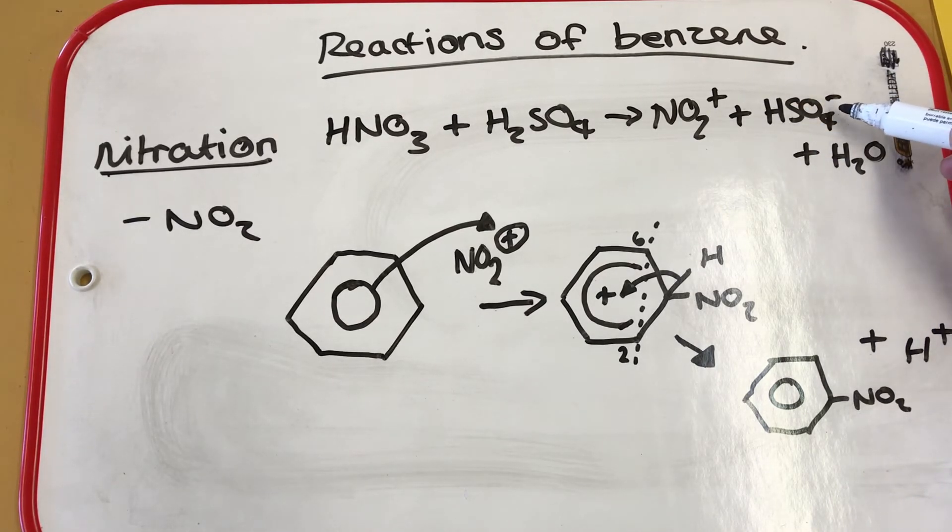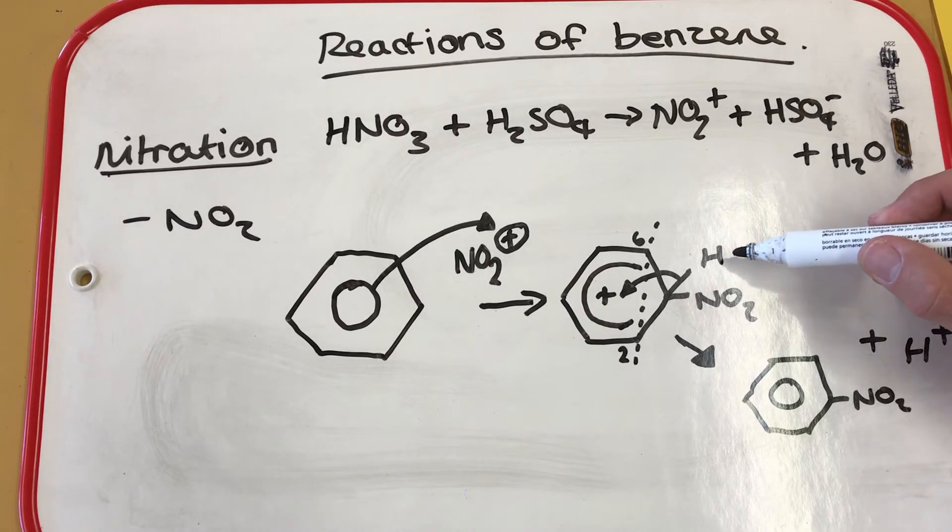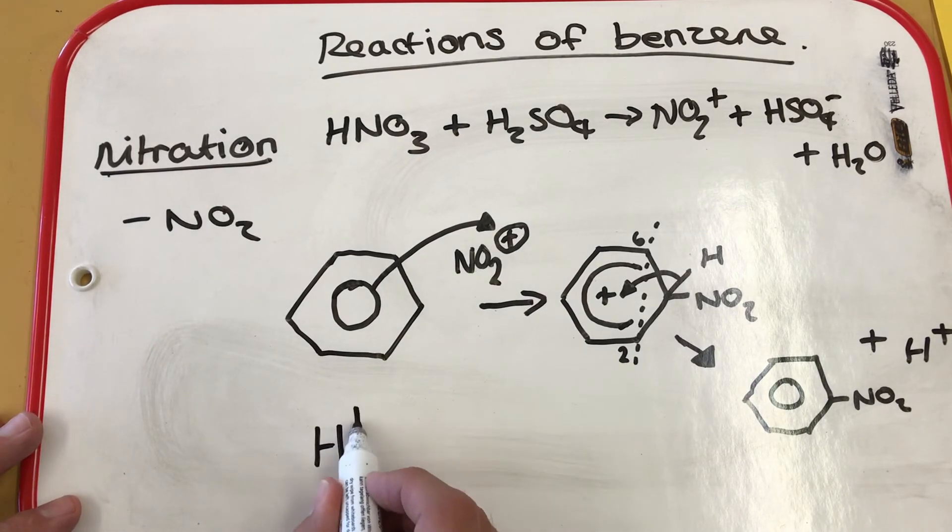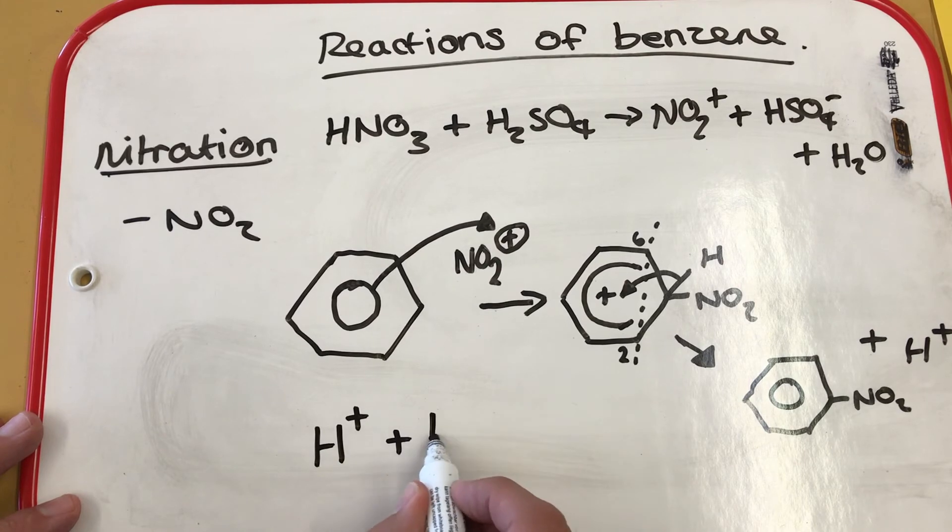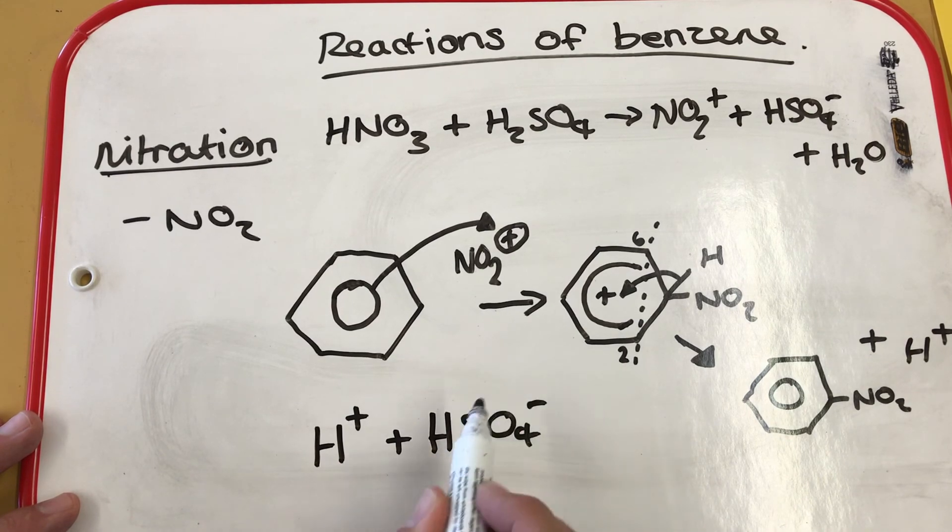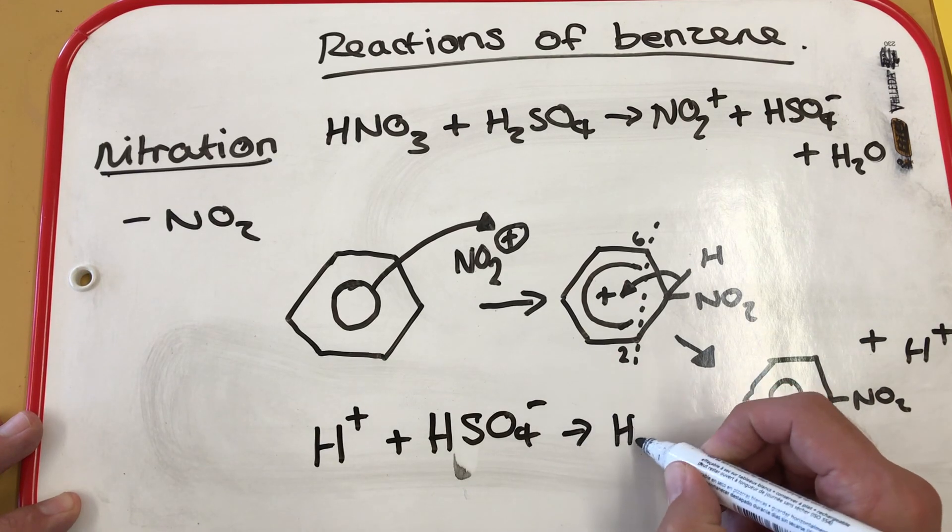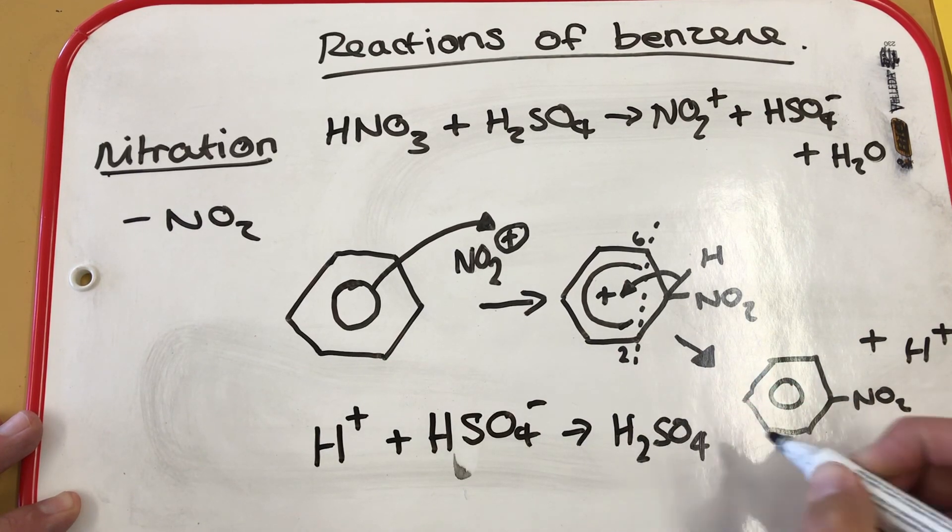Now, in reality, the HSO4- would remove this proton to form sulfuric acid. What you simply need to show for OCR A-level chemistry is that the proton reforms sulfuric acid by reacting with the HSO4-. So you get H2SO4 formed.